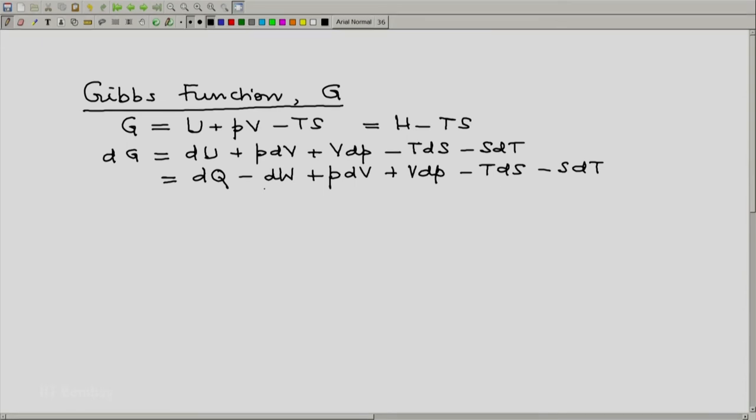Now you will notice that here we have a combination dW minus PDV. That will be dW other. So these two terms minus dW plus PDV will become minus dW other. And now when we transpose terms, you will get dG plus dW other plus VdP plus SdT equal to dQ minus TdS, which from the second law of thermodynamics is less than or equal to 0.